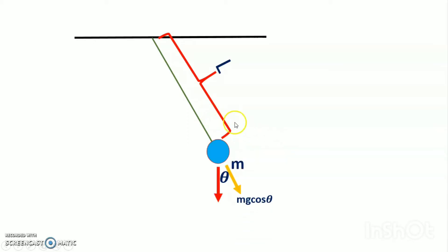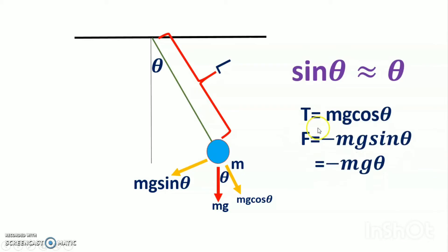The angle made with the resting position is θ. mg sin θ force is opposite and mg cos θ is this, where sin θ is equivalent to θ. T = mg cos θ, F = -mg sin θ. F is external force. I have already created this external force.